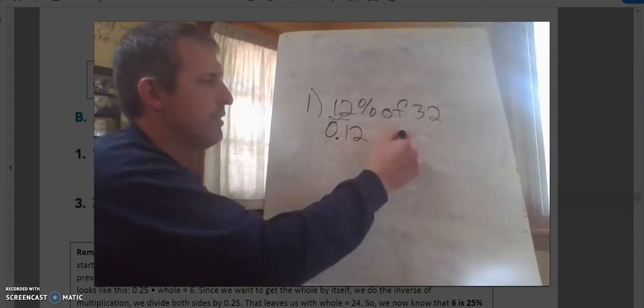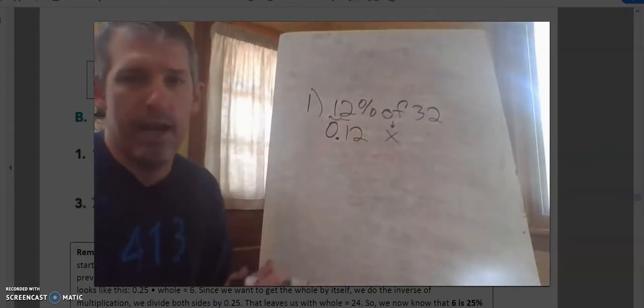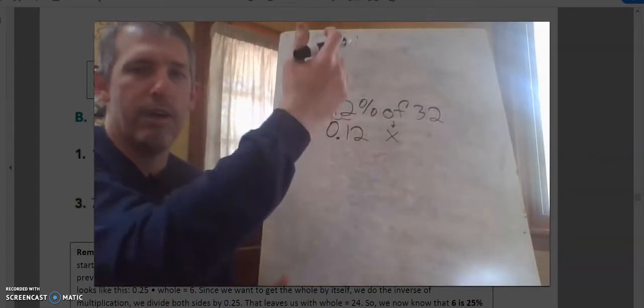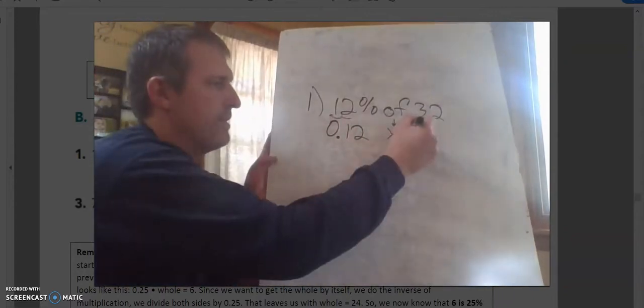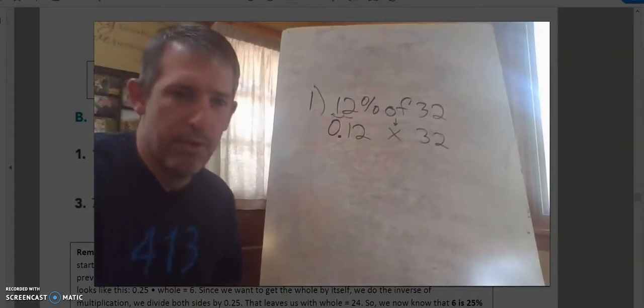Of always means multiply. I have yet to find a time when it did not mean that in math. So we're going to move down that word of into a multiplication sign, and then we're going to leave 32 just like it is. And then we pull up a calculator.